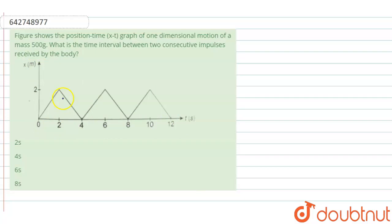So we can see there is a straight line and again straight line down like this where the graph is going on. So from 0 to 2 seconds, the slope of the graph is positive.